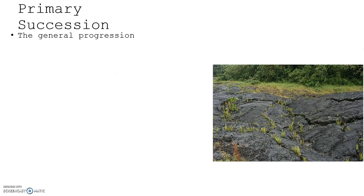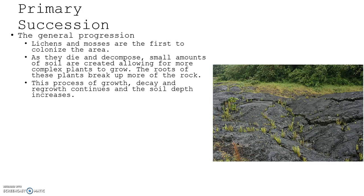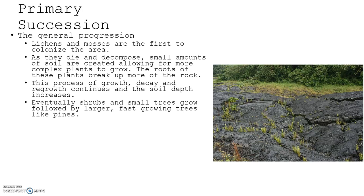In primary succession, the general progression starts with lichens and mosses — they're the first to colonize the area. As they die and decompose, small amounts of soil are created, allowing for more complex plants to grow. The roots of these plants break up more of the rock. This process of growth, decay, and regrowth continues until the soil depth increases.